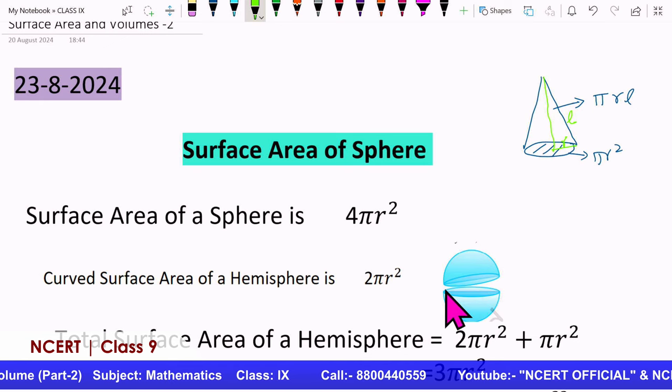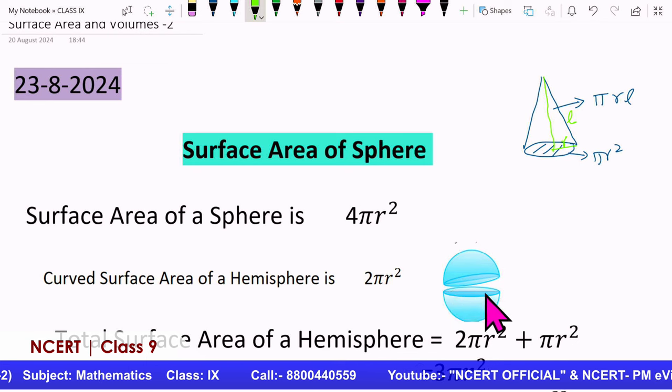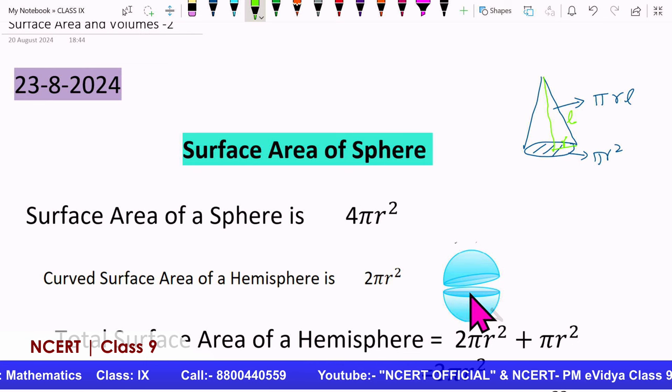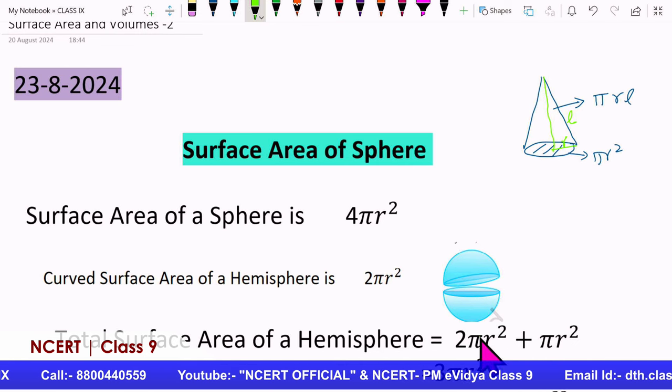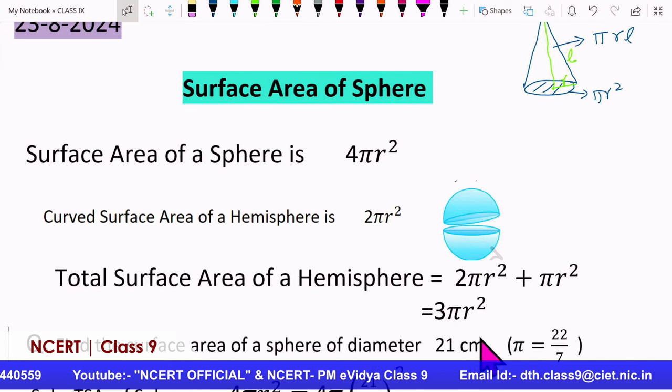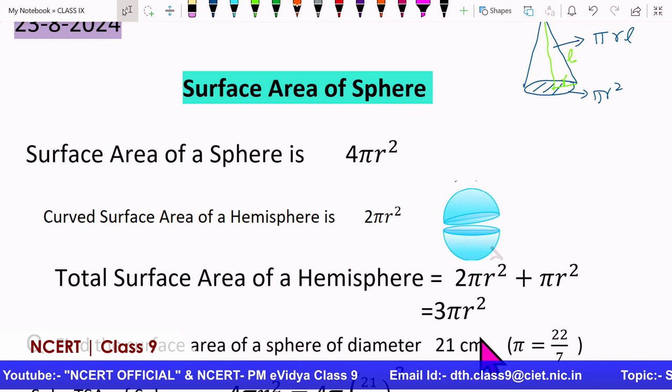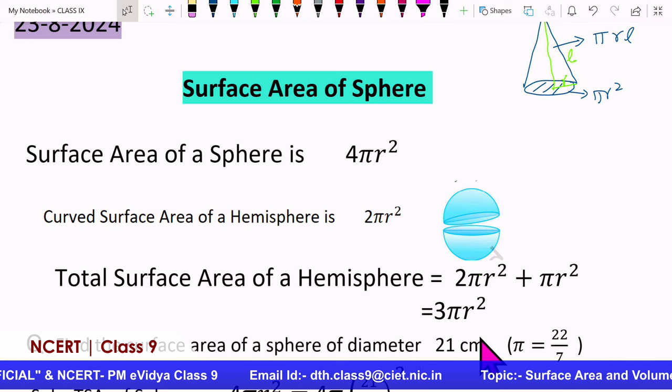And then to that we need to add one more surface that we have, that is the base of the hemisphere. So adding the two surface areas together, we get the area of the hemisphere as 3πr². Okay. So these are the information we have for today: surface area of the sphere and hemisphere.